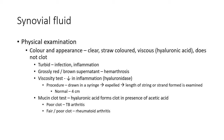Synovial fluid is turbid in cases of infection or inflammation, and can be grossly red or have a brown supernatant in hemarthrosis. A viscosity test is done: in inflammation, the enzyme hyaluronidase breaks down hyaluronic acid, decreasing viscosity. To test viscosity, synovial fluid is drawn into a string and expelled slowly — the normal strand length is 4 cm. If the strand breaks before reaching 3 cm, viscosity is lower than normal.